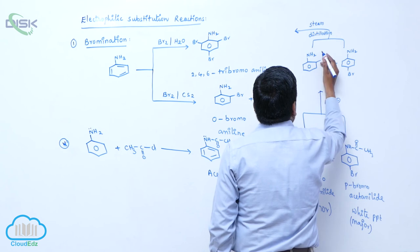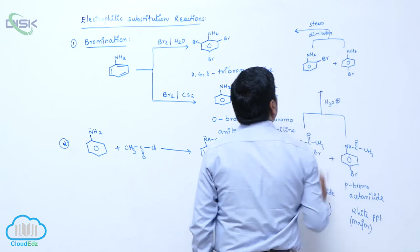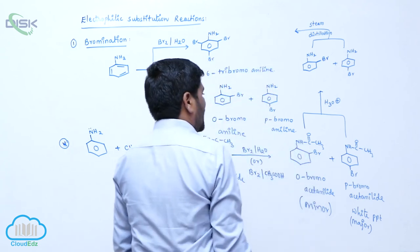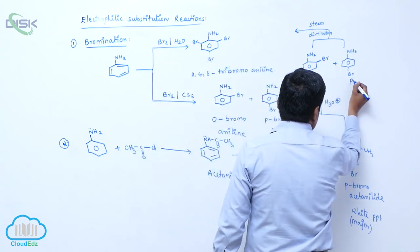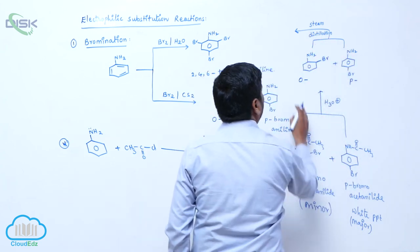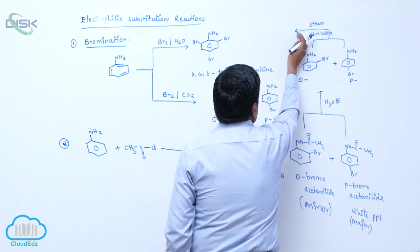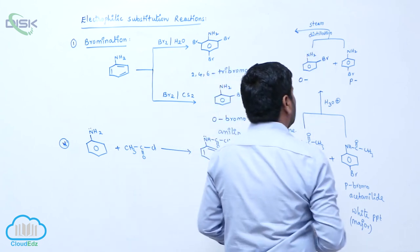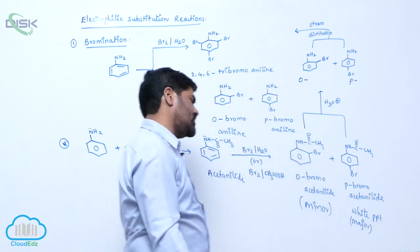These two compounds are separated. So both ortho and para isomer, this is ortho isomer, this is para isomer, both are separated by steam distillation method.